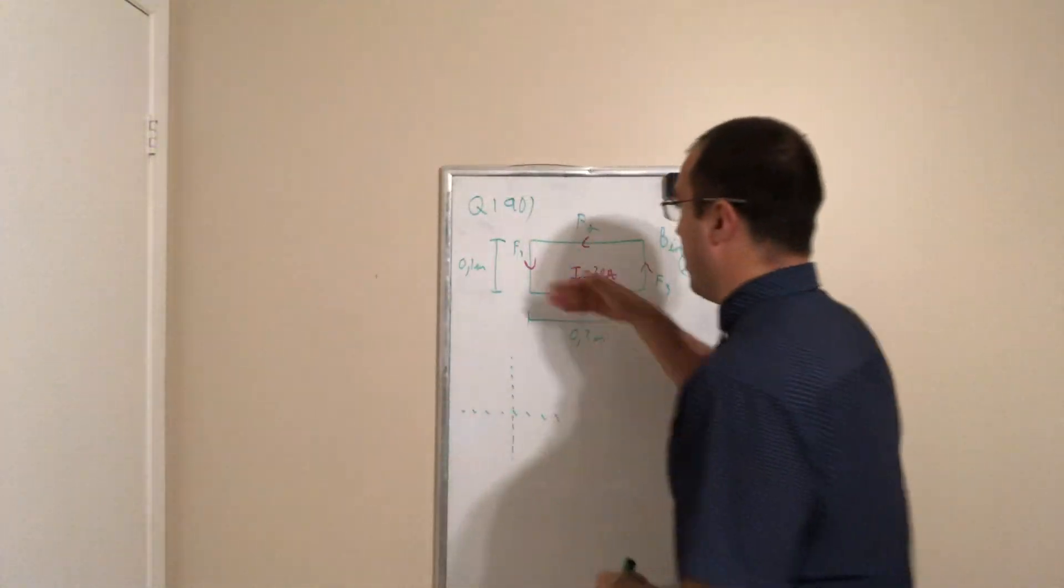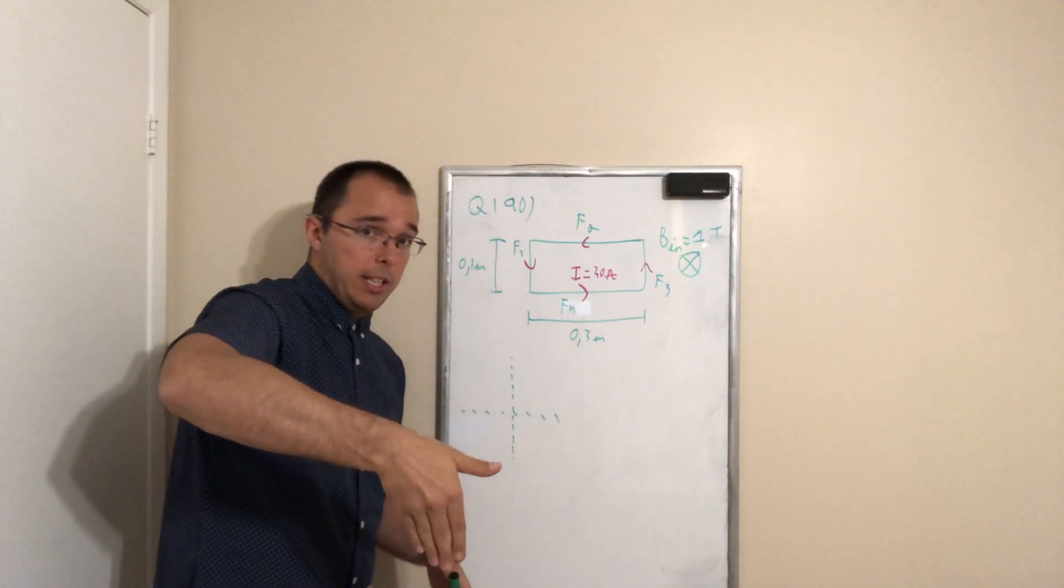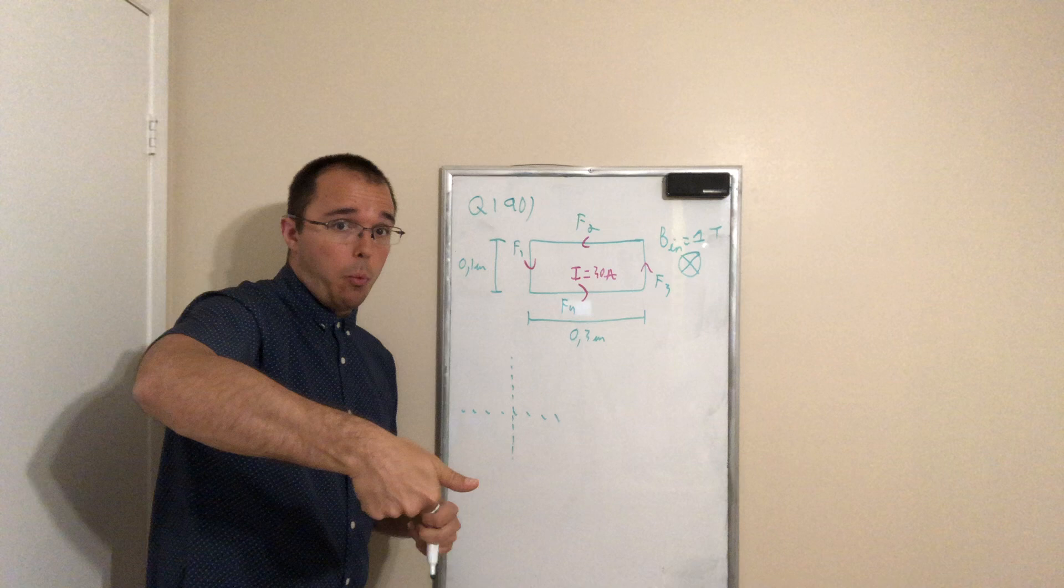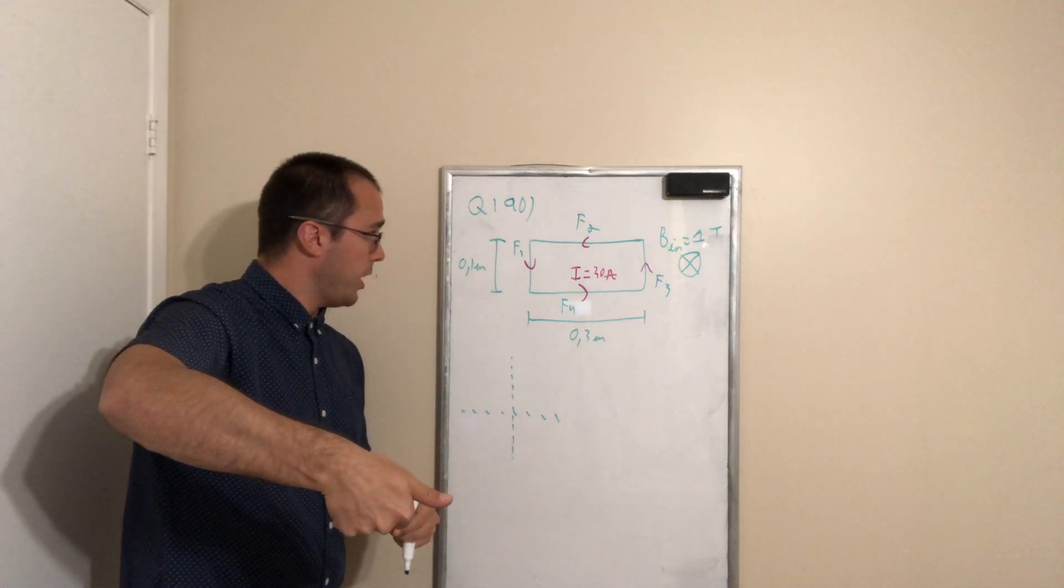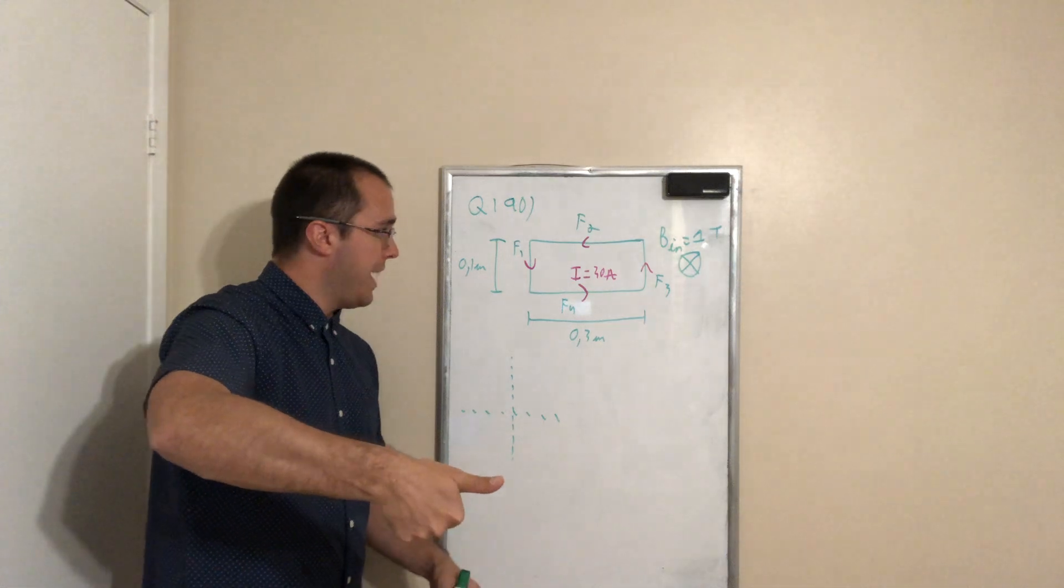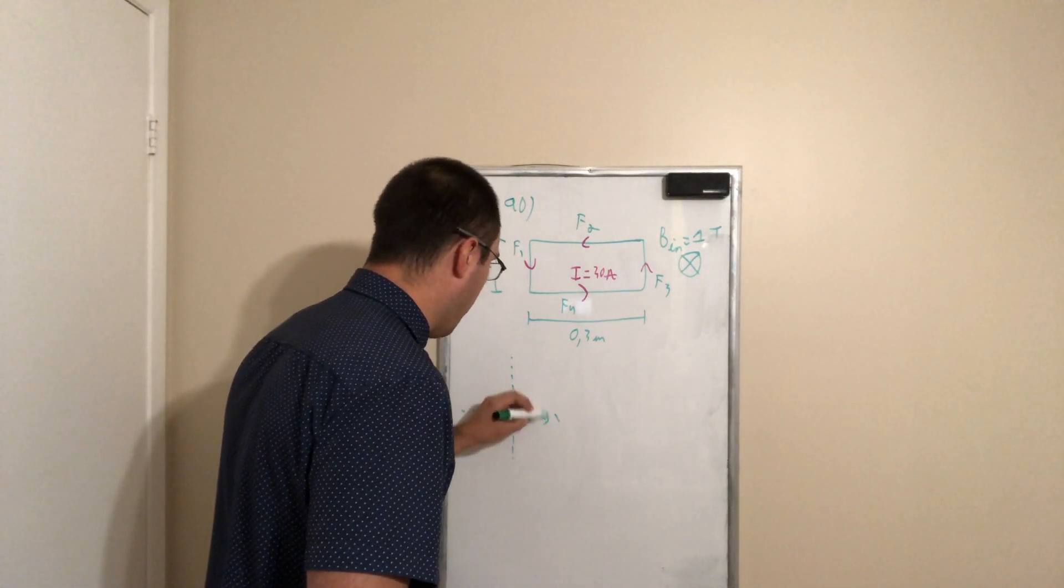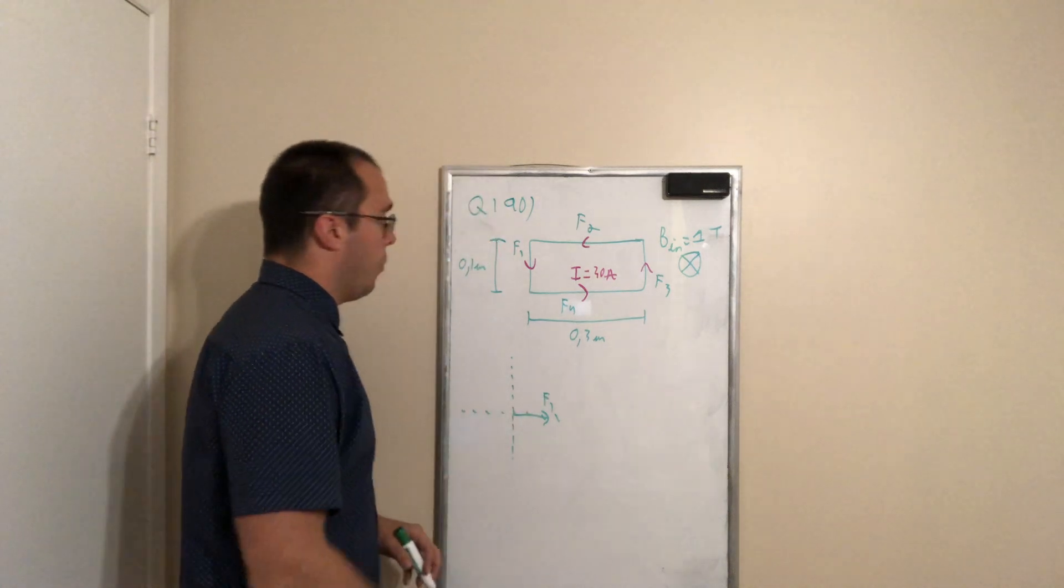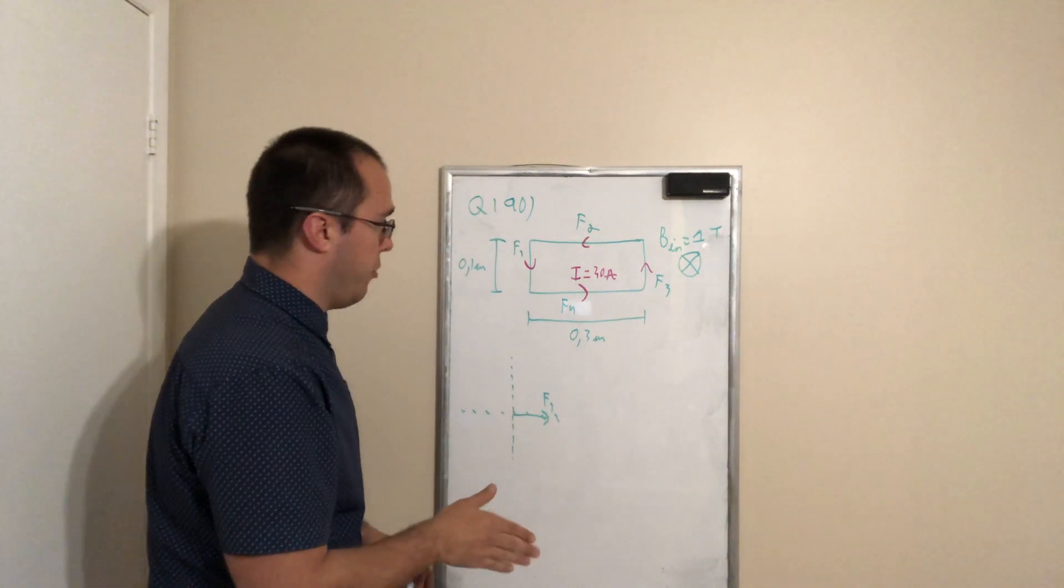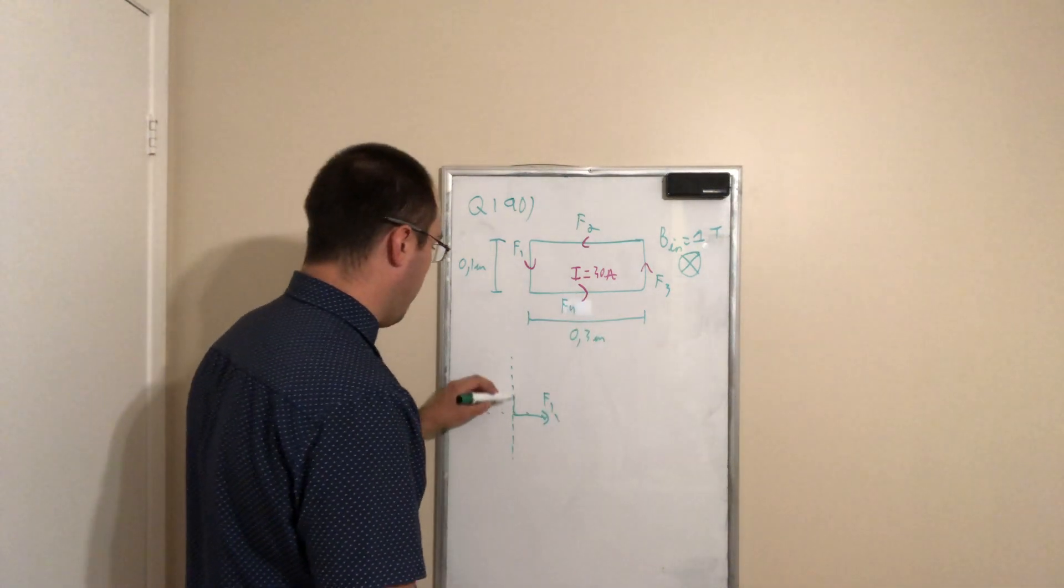So if we start with F1, we point toward the current, so it's pointing downward. We curl our finger toward the magnetic field, which is into the page, and our thumb is pointing in direction of the force. So we got F1 over here. We repeat the same logic with F4. Point to the right, curl our fingers, so F4 is pointing up.